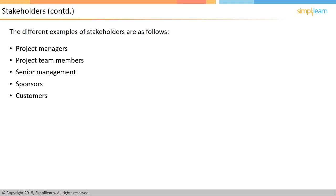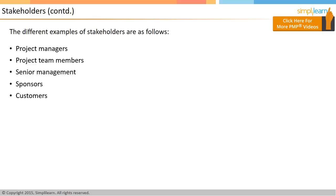The customer, which may be different from the sponsor, is a stakeholder as well. For instance, in many projects in the social sector, the sponsor may be the government or a development agency, whereas the customers would be the people who actually benefit from it. The end users, which may be different from the customers or the sponsors, are stakeholders too.